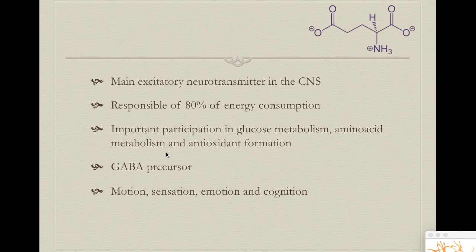Besides its use in synapses and activating neurons, glutamate has an important participation in glucose metabolism and amino acid metabolism, and it has an important role in antioxidant formation, mainly through the synthesis of glutathione. It also serves as the precursor of another essential neurotransmitter called GABA — the main inhibitory neurotransmitter in the brain, which we will review in a different video.